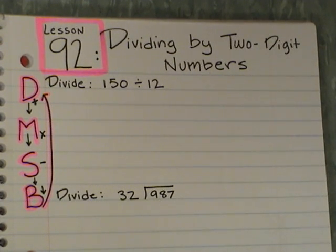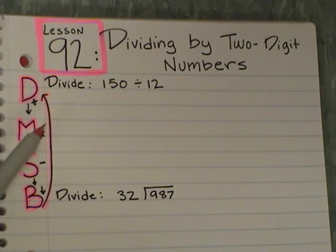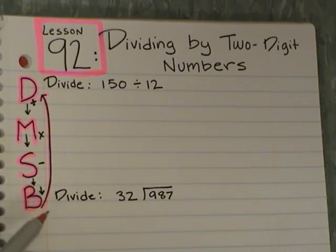Alright, so tonight's lesson is lesson 92, and we are dividing by two-digit numbers. So when we divide by two-digit numbers, we continue to follow the four steps that we know when we do normal division. So I just wrote it on the side for you: divide, multiply, subtract, bring down, and then go up again and start over.